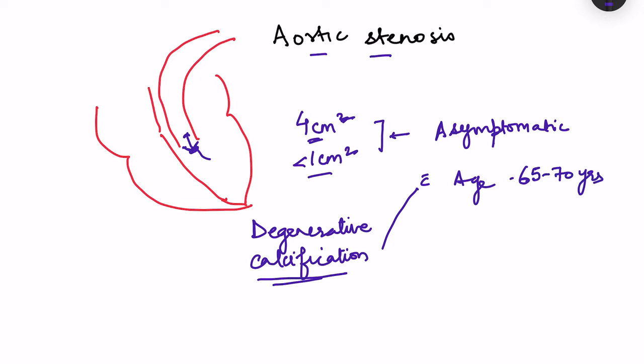However, if there is a congenital condition of a bicuspid valve, degenerative changes can appear approximately 10 to 20 years earlier. This aortic valve is normally tricuspid — all valves of the heart are tricuspid except the mitral valve, which is bicuspid. If the aortic valve is bicuspid at birth, there are greater chances of degenerative calcification changes occurring.